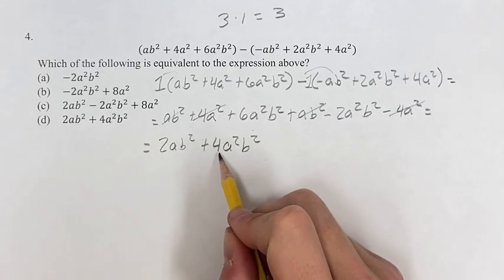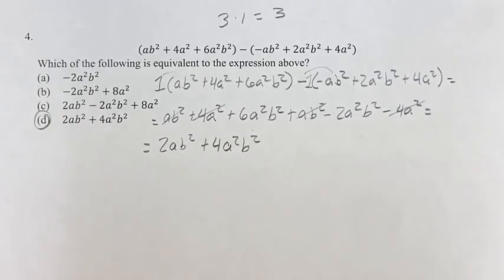So 2ab² + 4a²b² is going to be d, and that's your final answer. As always, thank you for liking and subscribing, and we'll see you in the next video.